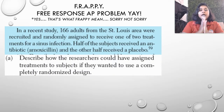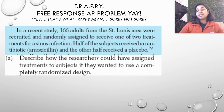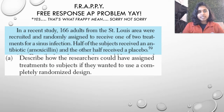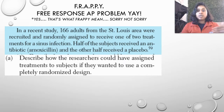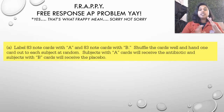So in a recent study, 166 adults from the St. Louis area were recruited and randomly assigned to receive one of two treatments for sinus infection. Half of the subjects received an antibiotic, amoxicillin, and the other half received a placebo. If you don't remember the term placebo, you might want to research it — make sure you know the statistical definition and not just the layman's term. So describe how the researchers could have assigned treatments to subjects if they wanted to use a completely randomized design. Remember the parts of a completely randomized design, and let's look at our answer.